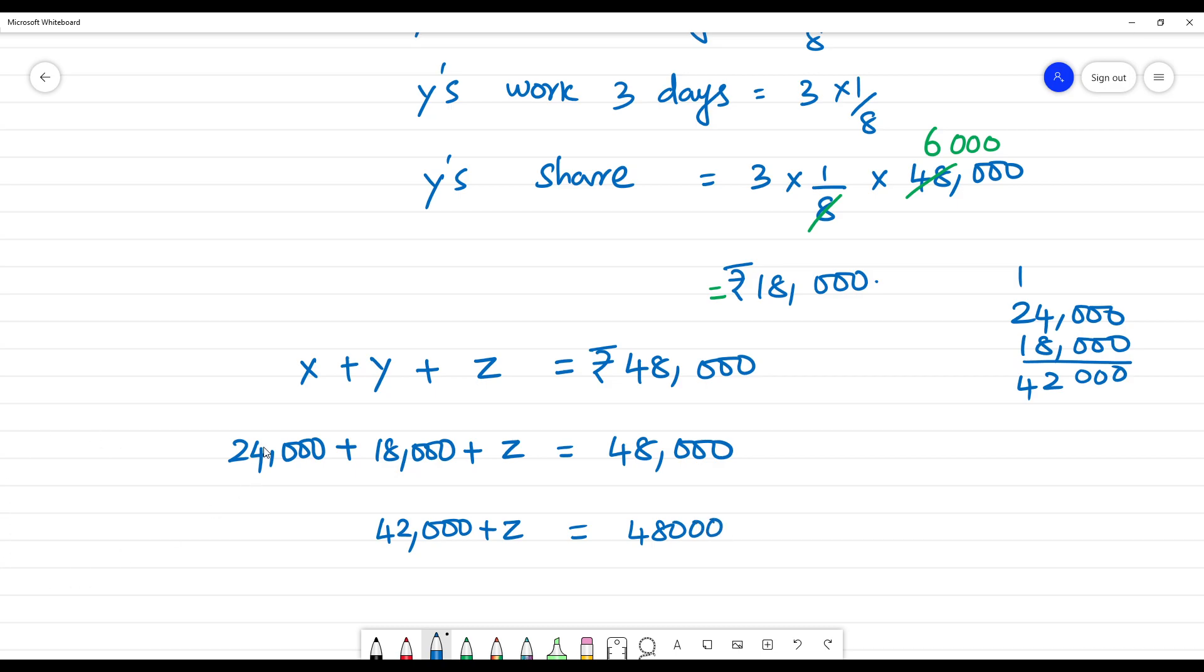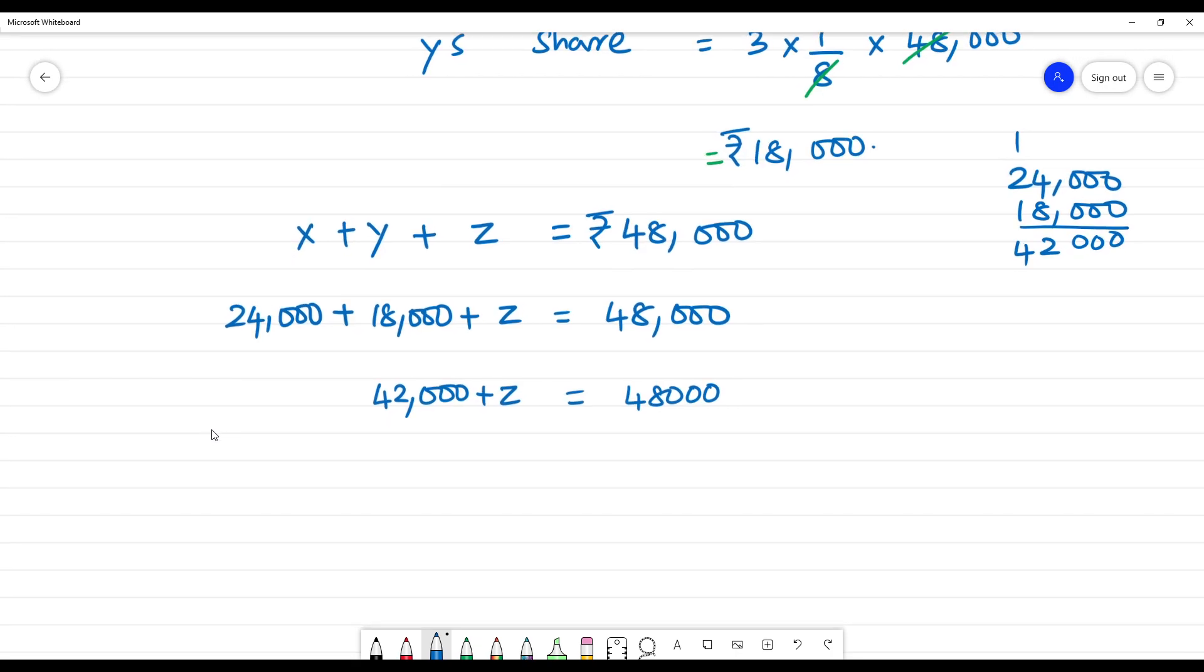So Z's share is equal to 48,000 minus 42,000, which equals 6,000.